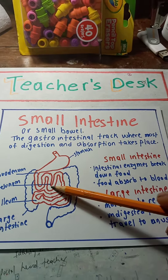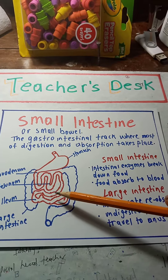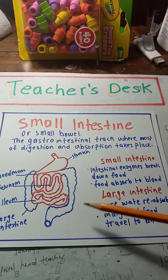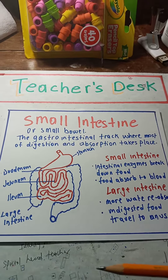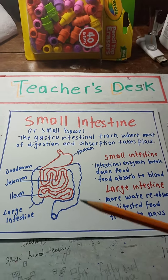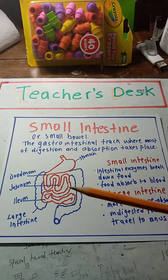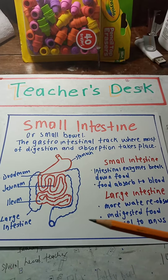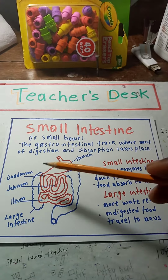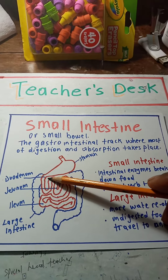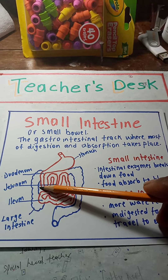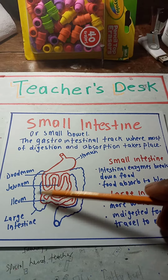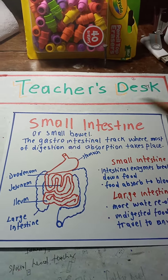The small intestine is 20 feet long, and the large intestine is 5 feet long. That's pretty long — 20 feet! It's very long. There are three different parts of the small intestine: you have the duodenum, the jejunum, and the ileum.